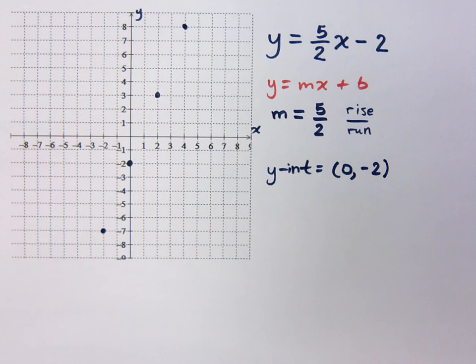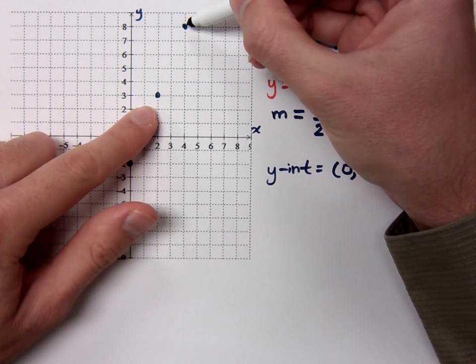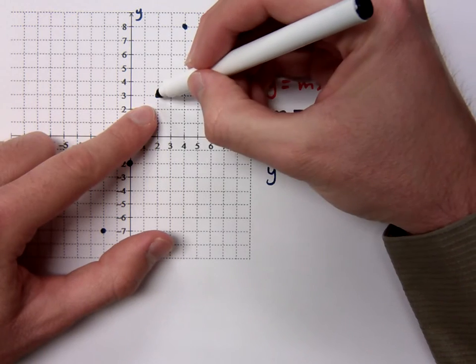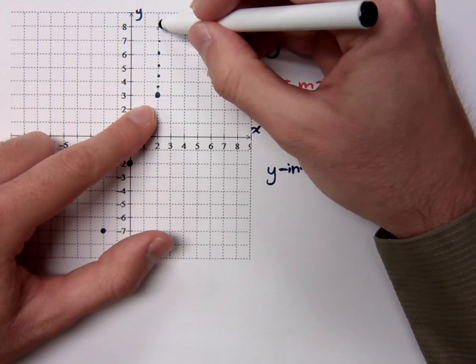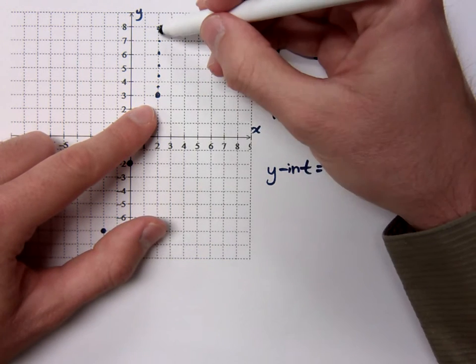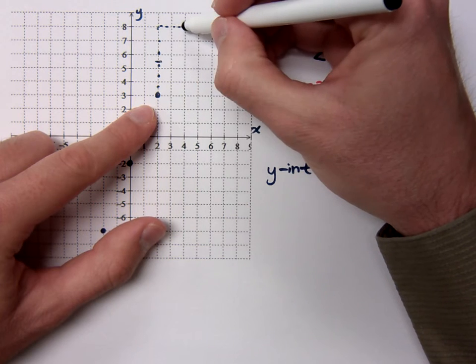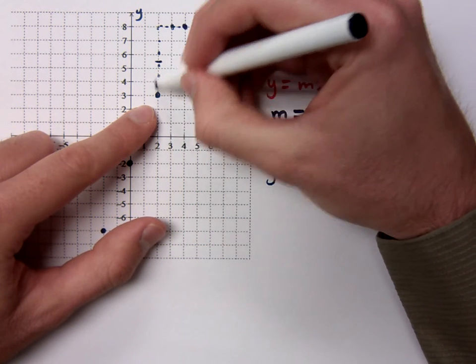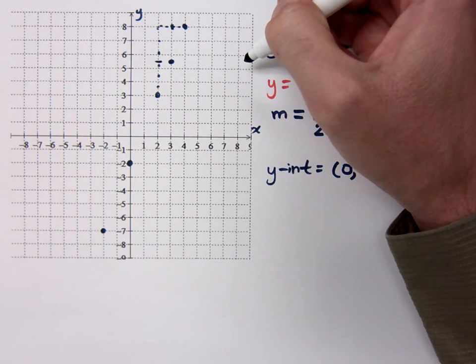But here's something I want you to be able to do in case you don't have a ruler. I want you to be able to identify those midpoints. It's probably easiest if I look between these two points right here. From this point to this point, you have a rise of 5 and a run of 2. What's half of 5? 2.5. What's half of 2? So if I go up 2.5 and over 1, I get a nice midpoint value.